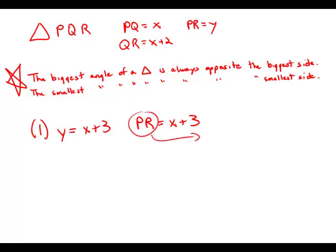And if PR is the biggest side, that means the angle opposite, angle Q, is the biggest angle. So this statement would be perfectly sufficient for figuring out which angle has the largest degree measure. So this is a sufficient statement.